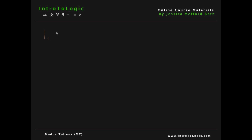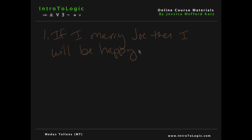Premise 1: If I marry Joe, then I will be happy. Premise 2: I did not marry Joe. Therefore, I am not happy.